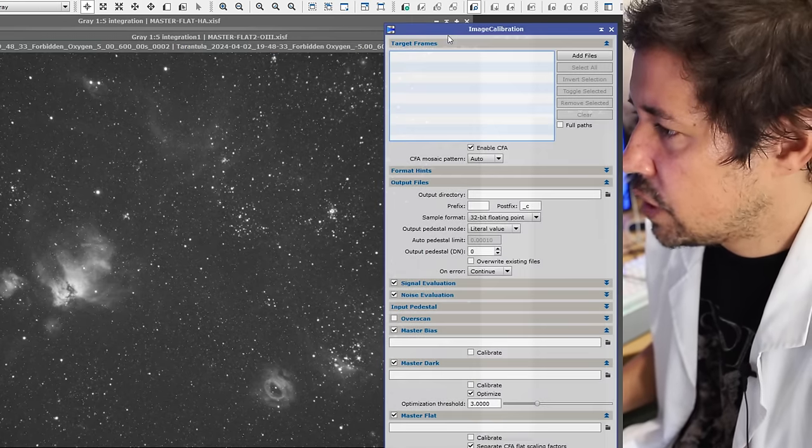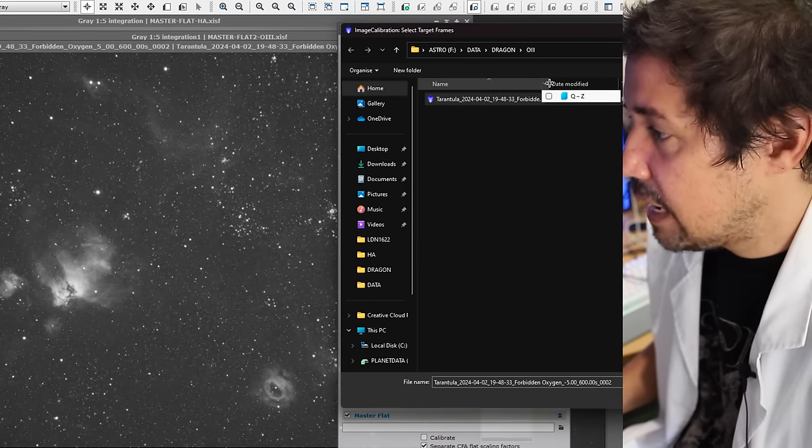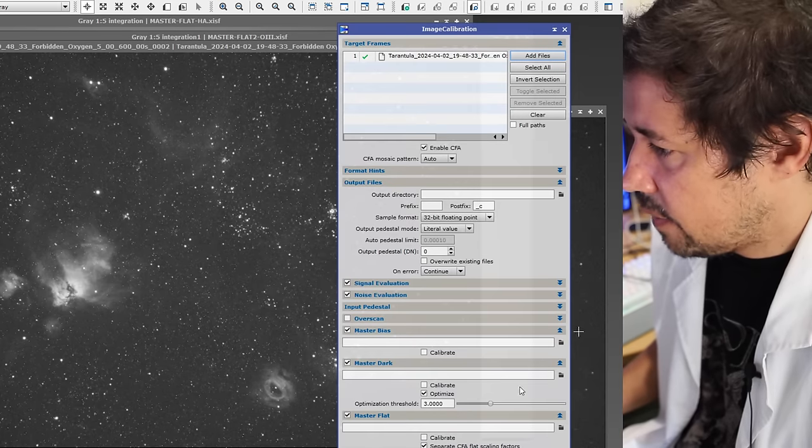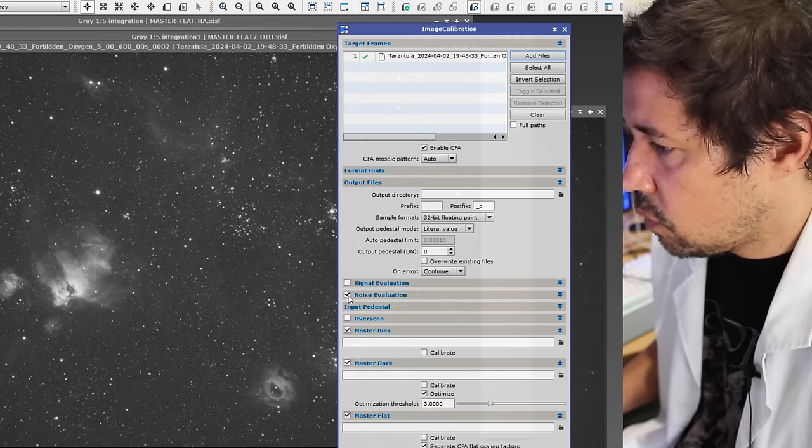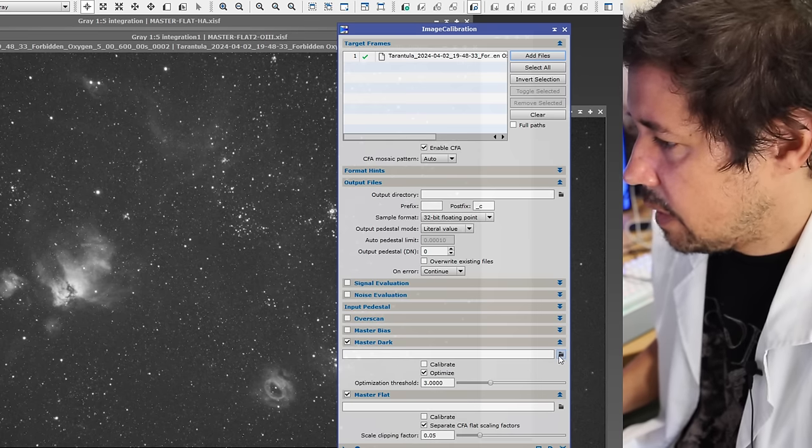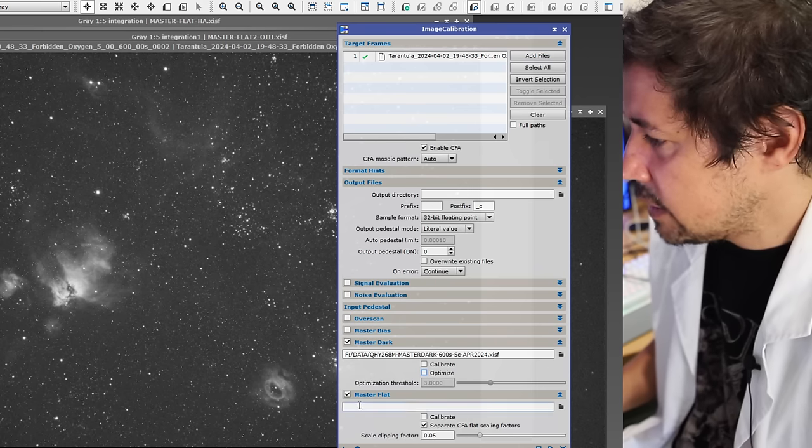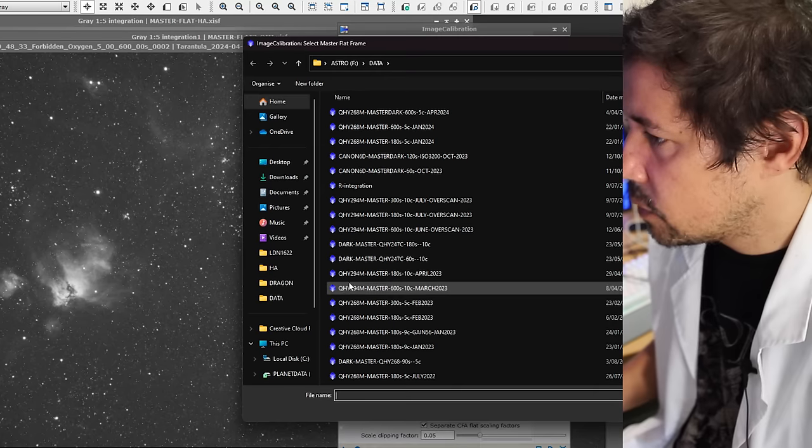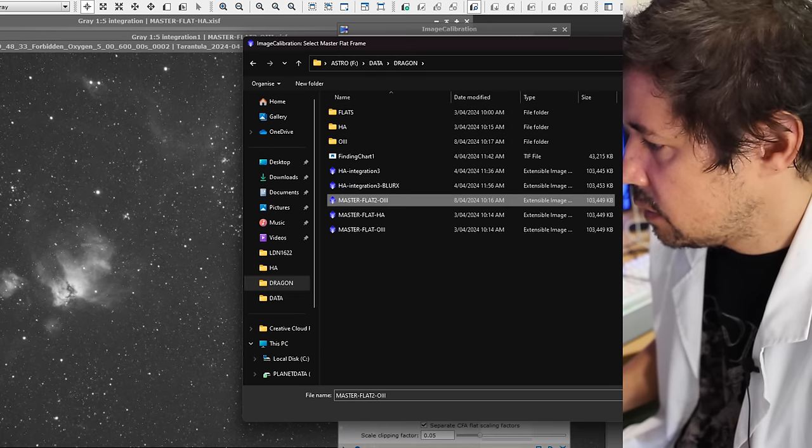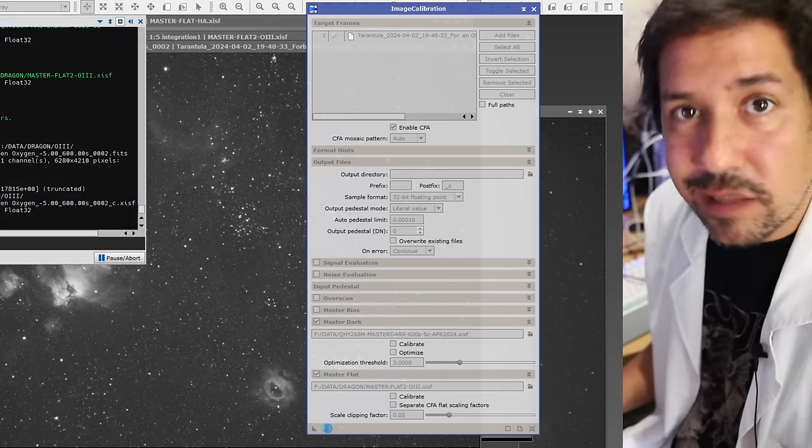So we're going to go into image calibration here and we're going to add our target frames, which is just this, for the example, just this one oxygen that we've got in here. And I will add that and then I'm going to untick all of these except for master dark and master flat. In the master dark, I will add my dark and I'm going to untick optimize. And in master flat, I'm going to add my flat frame, which we just created. Now I'm just going to apply global again and it should generate a nicely calibrated sub.